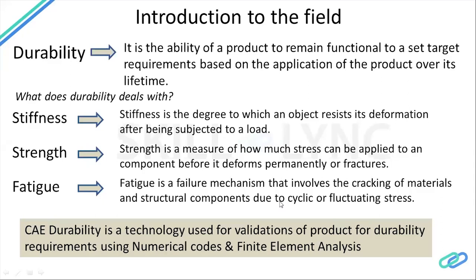Durability talks about three sub-domains: stiffness, strength, and fatigue. Stiffness is the degree to which an object resists its deformation after being subjected to a load. Strength is a measure of how much stress can be applied on a component before it deforms or fractures. Fatigue is a failure mechanism involving cracking of materials or structural components due to cyclical fluctuating stresses.